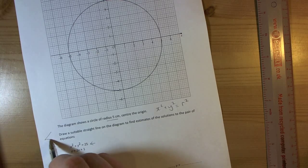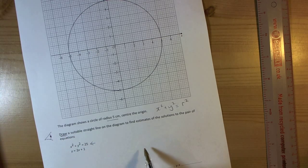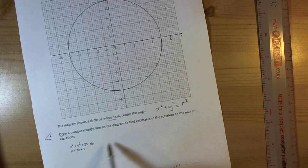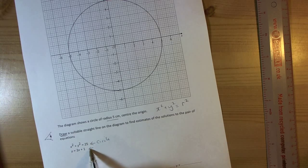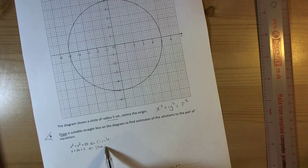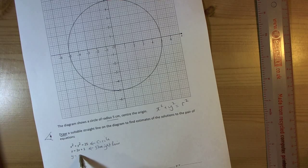We look for key information always in exam questions that trigger points that tell us what we're doing. So here it says draw. So we're going to draw a suitable straight line on the diagram. When we look at these two equations, that's the circle, this is the straight line. And we recognize this is a straight line equation because it's equivalent to y equals something to do with x, mx plus c.